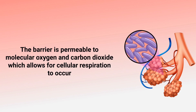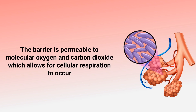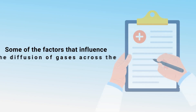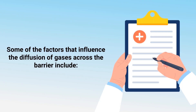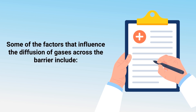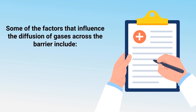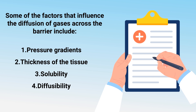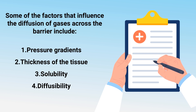The barrier is permeable to molecular oxygen and carbon dioxide, which allows for cellular respiration to occur. Some of the factors that influence the diffusion of gases across the barrier include pressure gradients, the thickness of the tissue, solubility, and the diffusibility of the gas.